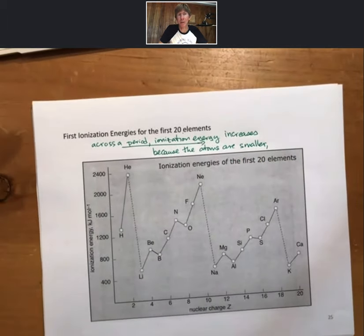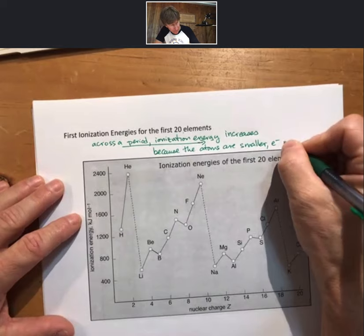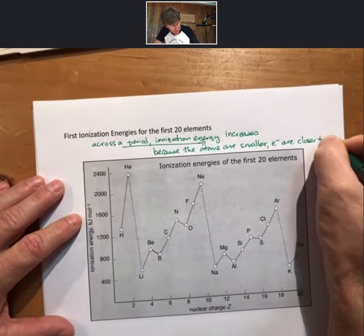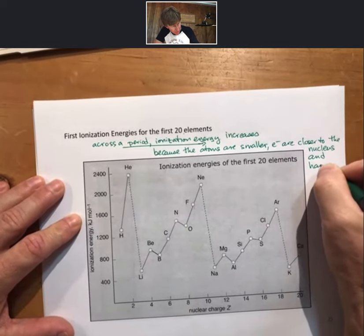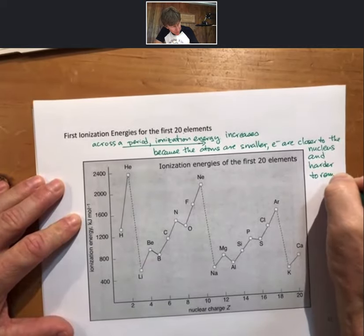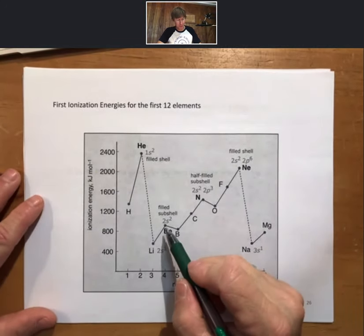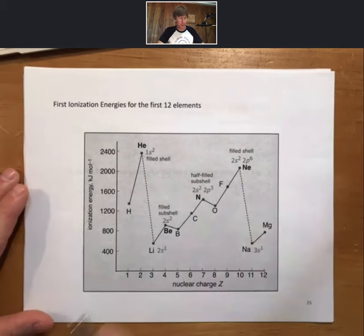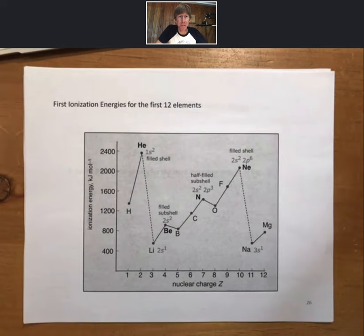Because the atoms are smaller and it gets harder to remove those electrons. Well, to complete the thought, the atoms are smaller, electrons are closer to the nucleus and harder to remove. A close-up here shows that there are some filled subshell and half-filled subshell effects. We saw something similar when we were talking about the exceptions to the shape of the periodic rule for the coinage metals as far as electron configurations go and for chromium and molybdenum. Similar things are going on here as well.